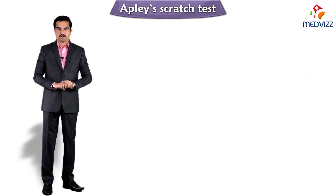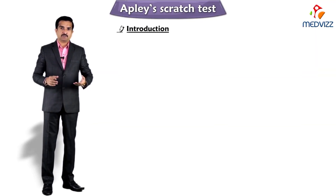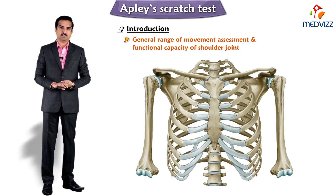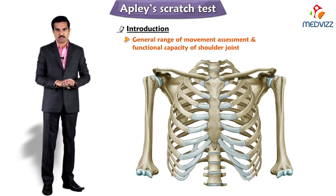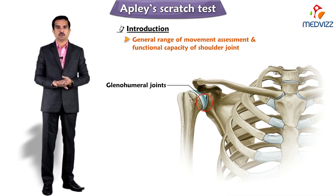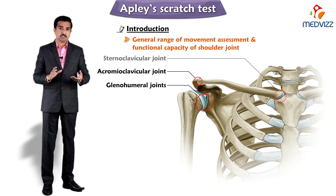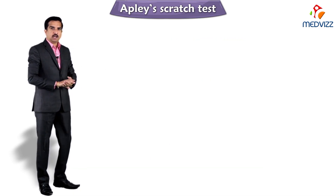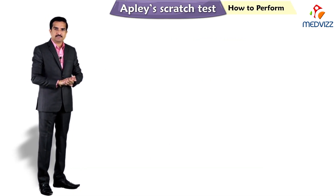Apley's scratch test is the assessment of the general range of movement and the functional capacity of the shoulder joint — that is the glenohumeral, acromioclavicular, sternoclavicular, and scapulothoracic joints. Now let us see how to perform this test.